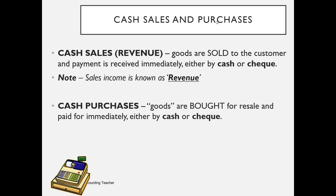Cash purchases are goods that are bought for resale and paid for immediately. The word 'purchases' is a noun — it means goods bought for resale, and they're a type of expense in our accounts. We need to be careful because a business can purchase anything, including assets. 'Purchases' with an S on the end specifically means goods bought for resale. Any purchases not sold at the end of the year become our closing inventory — an important distinction from purchasing something generally.